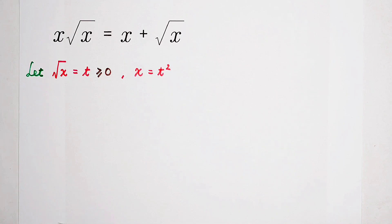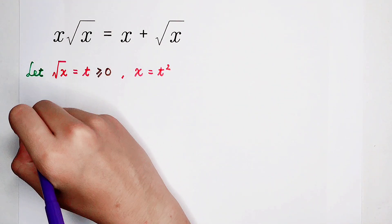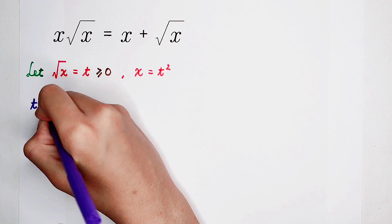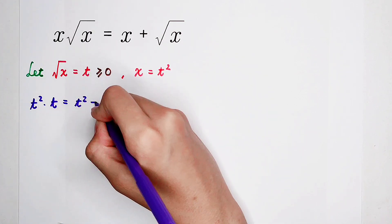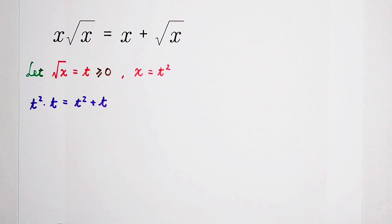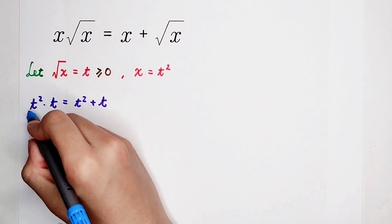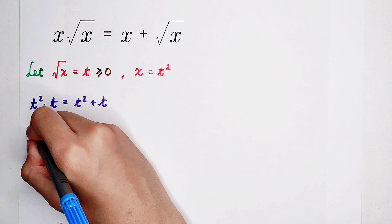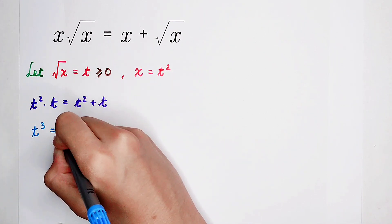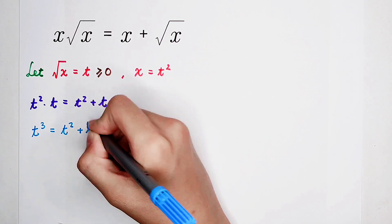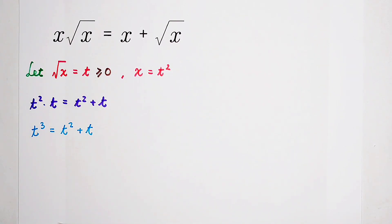Now, firstly, substitution. So that is only equal to t squared, and then times t is equal to t squared plus t. And then, for a second step, t squared, then times t, it is t cubed. On the right side, t squared plus t. So easy.